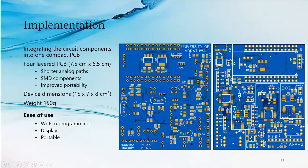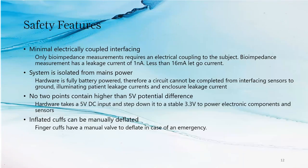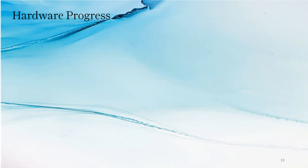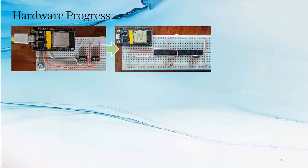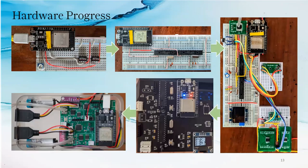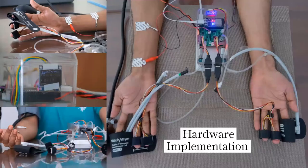The system is implemented on a small 7.5 cm by 6.5 cm four-layer PCB that has a few surface mount components. As it's a medical product, there are several safety features such as electrical isolation and emergency valves that are used to maximize the safety of the patient. We went on a very long journey with a lot of twists and turns in creating the system. This is a glimpse of how we went from a breadboard to our final circuit.